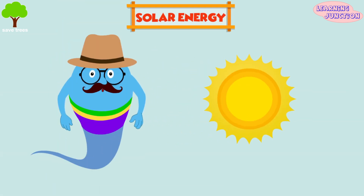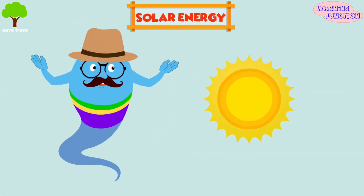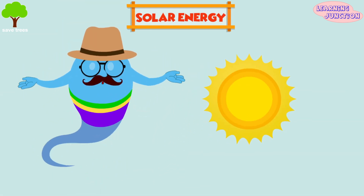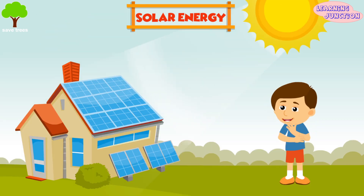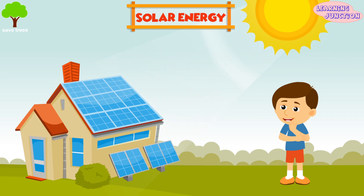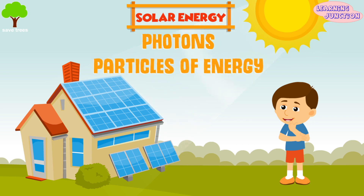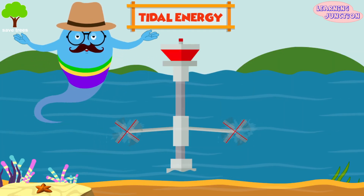Solar energy. The sun is the source of all life on Earth and solar energy is useful in many different ways. Solar panels are used to convert light from the sun, which is composed of photons or particles of energy, into electricity that can be used to power electrical loads.